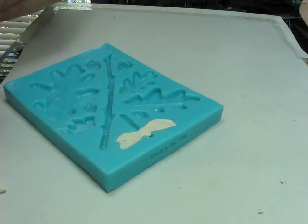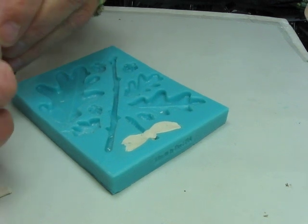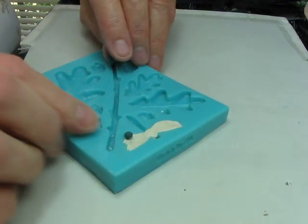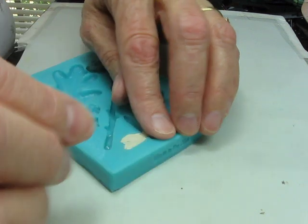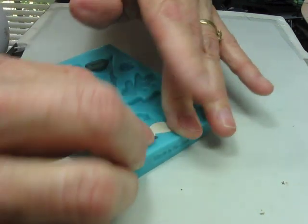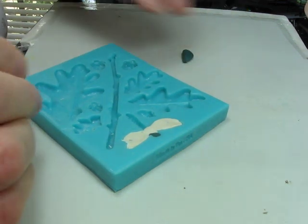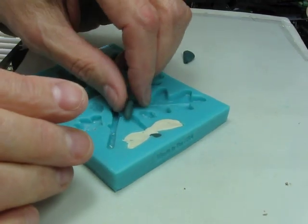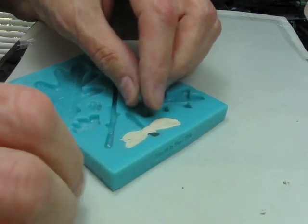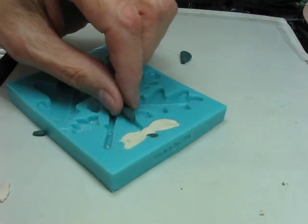To make the dragonfly's head I'll make a very small ball like this and we'll just press it in. To make the body I'll roll a small stick of clay that will fill the body and I'll press it in.